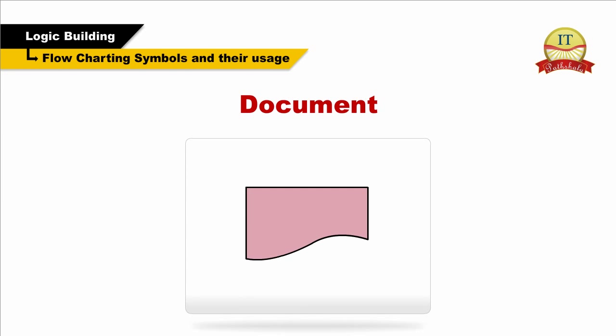Document or report box. A rectangle with a curved bottom represents a document or report box. The document flowchart symbol is for a process step that produces a document.